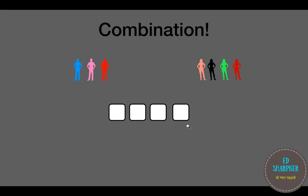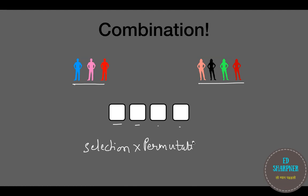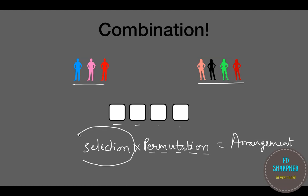Let's move to combination. When the number of distinct n things is larger than the vacancies we have, before arranging people in spaces we have to select them first. Selection multiplied by the permutations of the selected people in the given vacancies gives you total arrangement. Let's see how we can find the formula for selecting r people out of n distinct people.